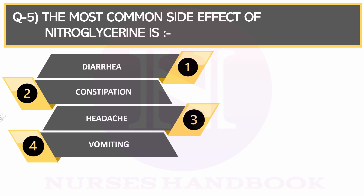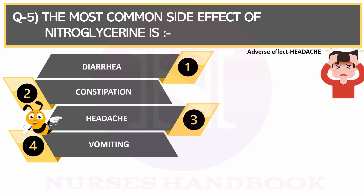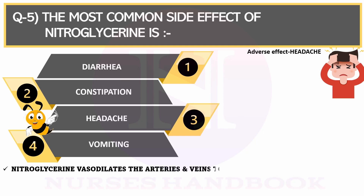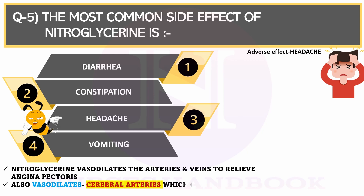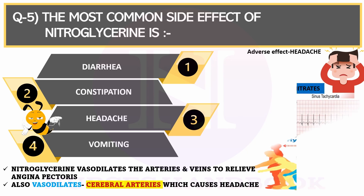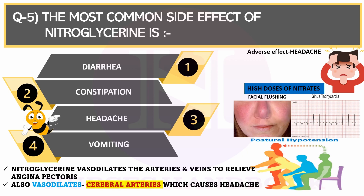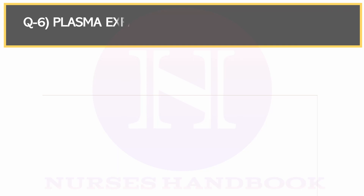The correct answer is headache. The most common side effect of NTG is headache, as NTG dilates the arteries and veins to relieve angina pectoris. But at the same time, it vasodilates the cerebral arteries, which causes headache. High doses of nitrates cause facial flushing, sinus tachycardia, and postural hypotension.